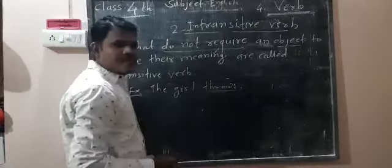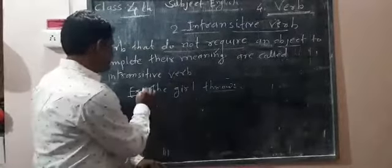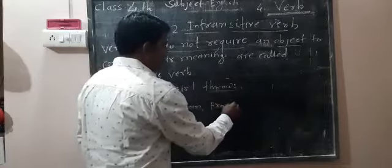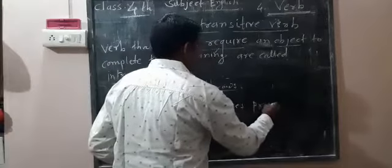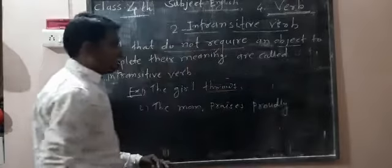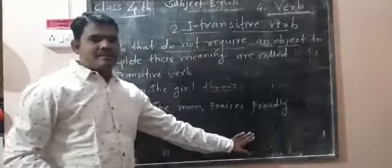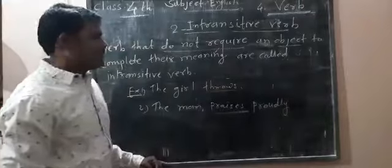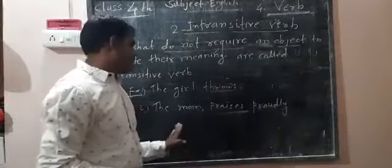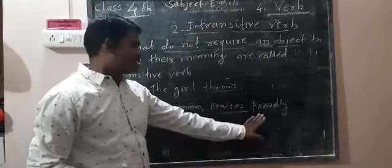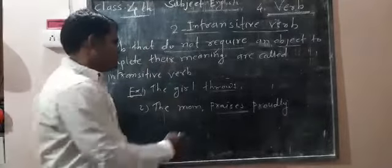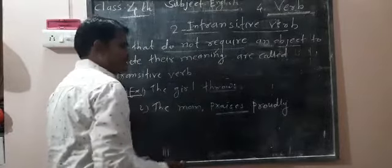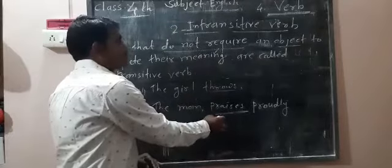This is the example of intransitive verb: 'The man praises proudly.' In the sentence 'The man praises proudly,' there is no object given, but this is a clear meaning. The meaning of this sentence is clear, so it is an example of intransitive verb.